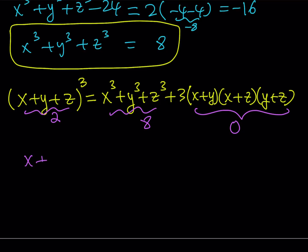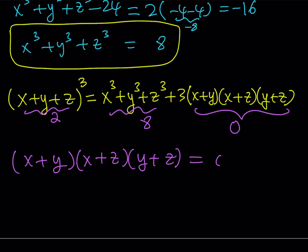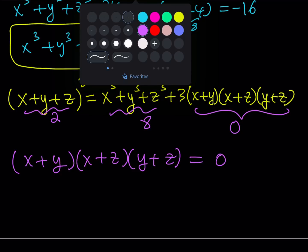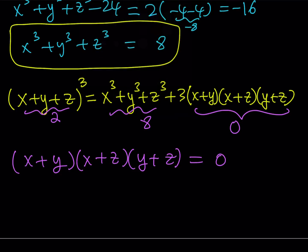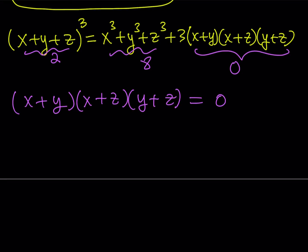From the zero product property — and you're probably saying, well, is this always going to work? Nope. If it's not equal to 0, it's not going to work. But again, at the beginning I said that these numbers are special, like a, a squared, and a cubed. If that's the case, it's always going to work. I do have a product that's equal to 0, which means from the zero product property, at least one of these factors must equal 0.